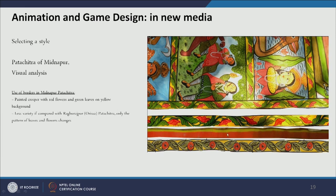The Pata Chitra format itself acts like a storyboard — each frame contains one story with one song attached. The frames are divided by particular borders found in both Midnapur and Kalighat Pata Chitra. These structural elements and the traditional narrative format directly informed the animation storyboard structure.